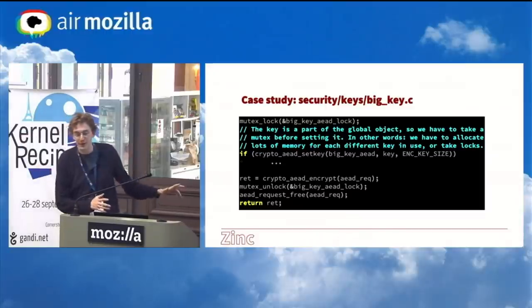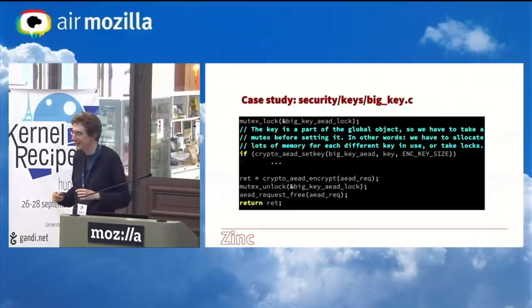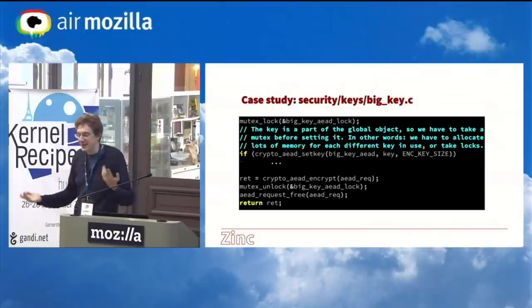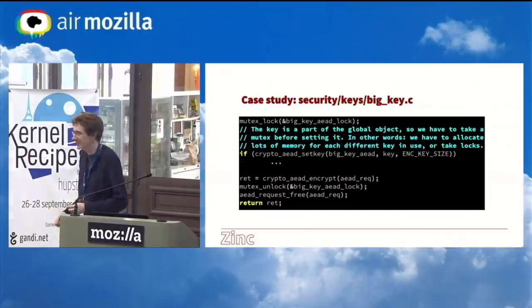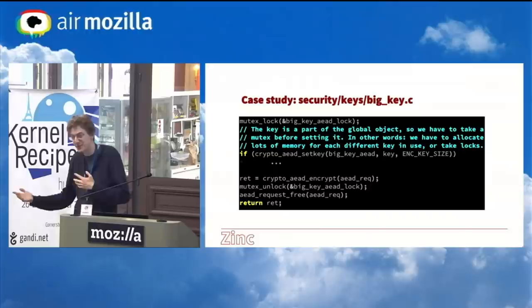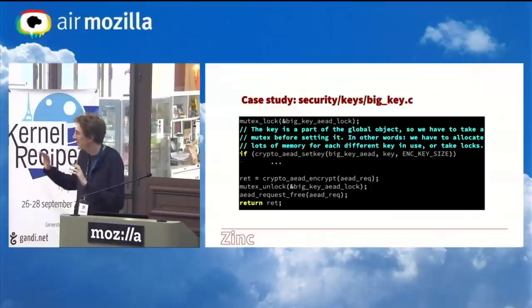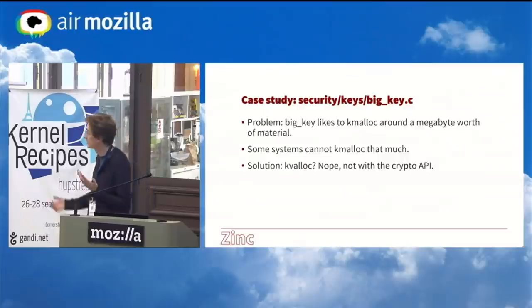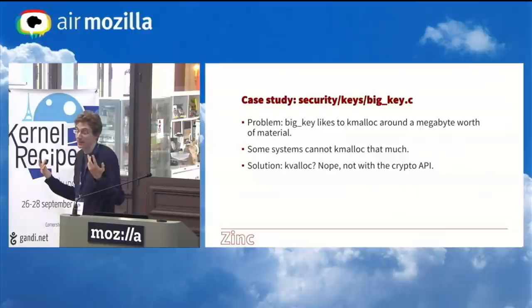With WireGuard requirements, we don't want any allocations. What would the options be? Having a pool of pre-allocated objects — now I've got to have a whole file just handling pools of these objects. But what if it's not in heavy use and I don't want that many pre-allocated? Am I going to reinvent malloc? It sounds like dynamic memory allocation all of a sudden. So that's what it looks like after rewriting it. BigKey also likes to malloc sometimes around a megabyte worth of material.